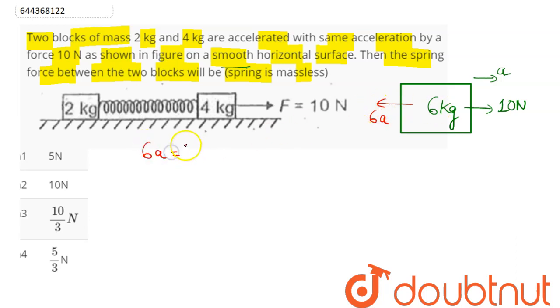Hence we can say 6A equals 10. So acceleration of the system is given as 10 by 6 meter per second square. So we can say acceleration comes here as 5 by 3 meter per second square.